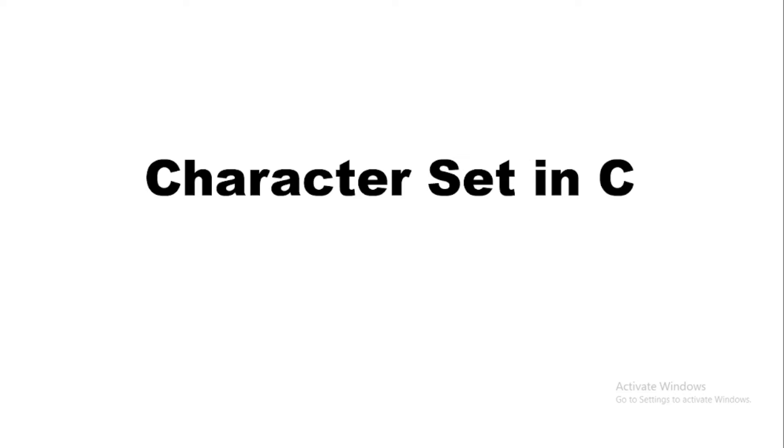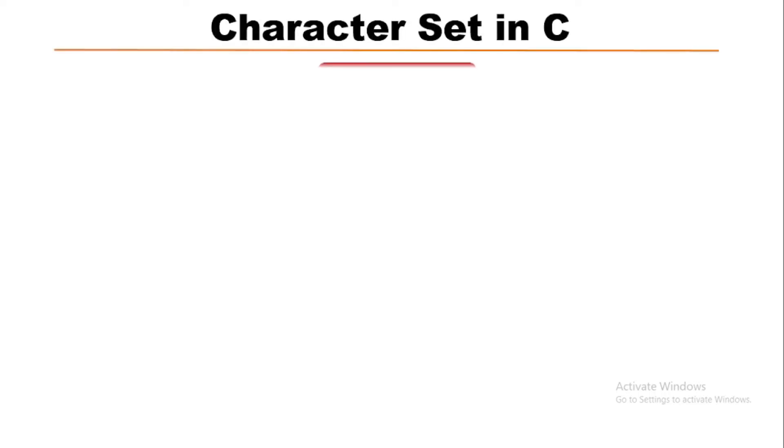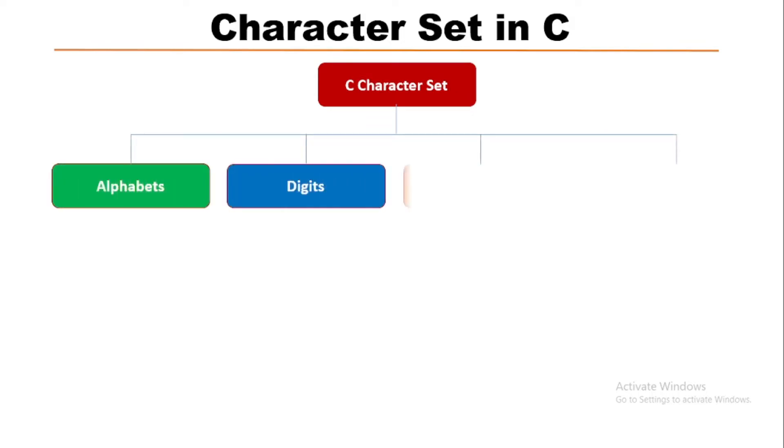Today we will learn about the character set in C programming. C character sets have mainly four types: alphabets, digits, special characters, and white space.